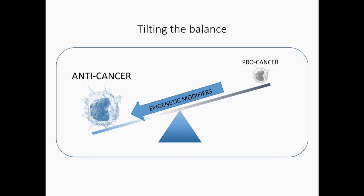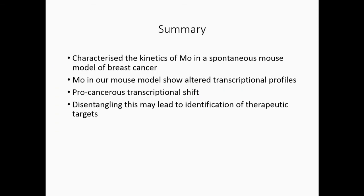Where do we go forward from this? Well, a lot of these drugs are not very specific, so they have terrible side effects. So the key is really to try and target these. And that's why monocytes are quite nice because we can actually develop more specific targeted therapy in terms of delivering these monocytes directly into the bloodstream, as has been done with dendritic cells. So I just want to summarize by saying that in the first year of my PhD, we've characterized the kinetics of monocytes in a spontaneous mouse model of breast cancer. The monocytes in our mouse model did show a transcriptional alteration, and there's a pro-cancerous shift. And disentangling this really may lead to identification of therapeutic targets.